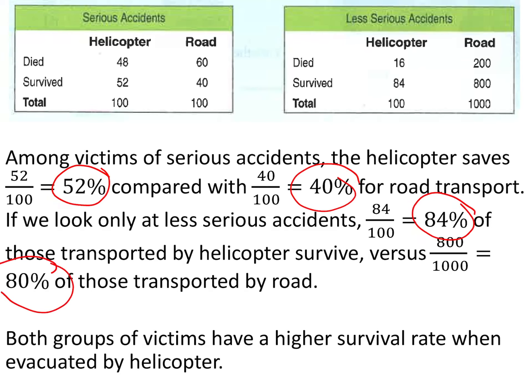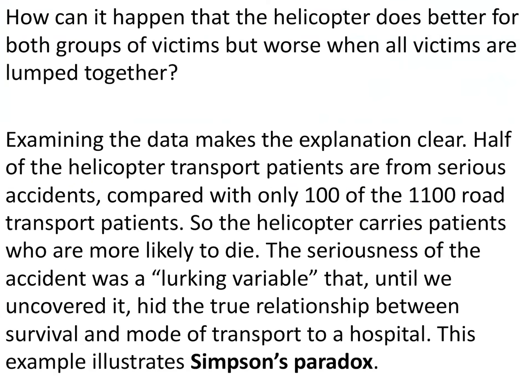Both groups of victims have a higher survival rate when evacuated by helicopter. How can it happen that the helicopter does better for both groups of victims, but worse when all victims are lumped together? Examining the data makes the explanation clear: half of the helicopter-transported patients are from serious accidents, compared with only 100 of the 1,010 road transport patients being serious. The helicopter carries patients who are more likely to die. The seriousness of the accident was the lurking variable that, until uncovered, hid the true relationship between survival and mode of transport. This example illustrates Simpson's paradox.